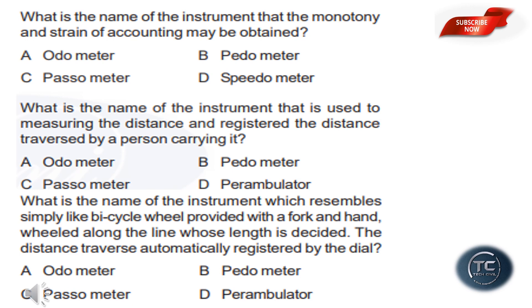This is a simple bicycle wheel with a fork handle. This distance will automatically be registered by the dial. That is the instrument. The answer is option D: Perambulator.